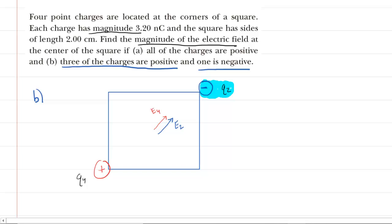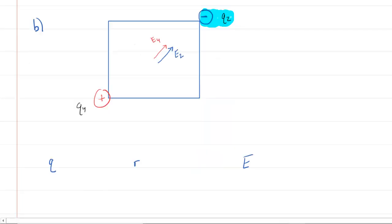Now to understand how to proceed, let's set up a little chart. It's a simple little chart. We're just going to have a column for the charge, a column for the distance to that charge, and then a column for the electric field. So for example, let's start out with the charge marked Q2.